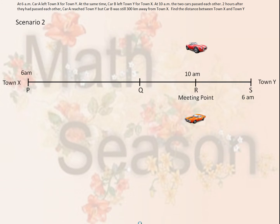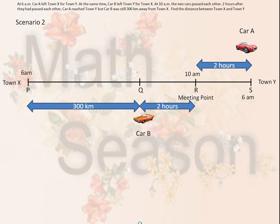Next scenario: car A had moved on to town Y by 12 noon, whereas car B had only reached point Q by 12 noon, still with 300 kilometers to go.